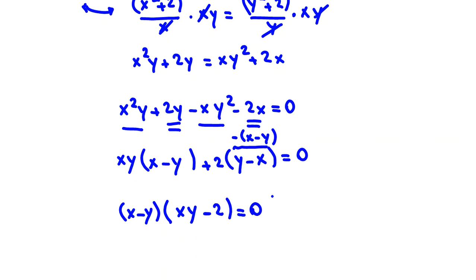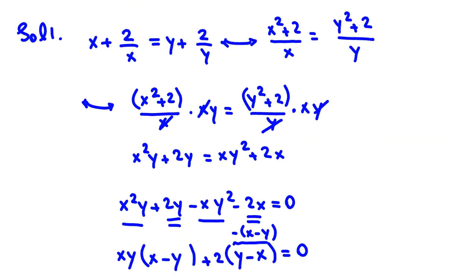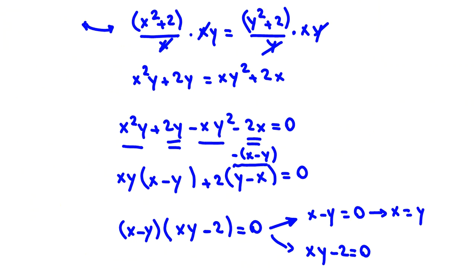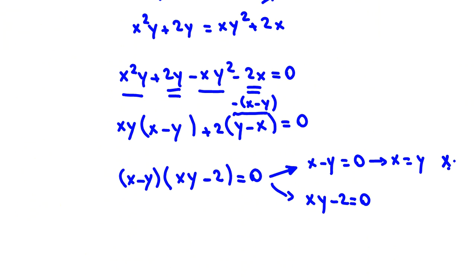Product of two things equal to zero, so at least one of them should be zero. x minus y equals zero, or xy minus 2 equals zero. From first one, x equals y. But in the problem, it says x and y are distinct non-zero. They are not equal. Here we reach contradiction. And only here, we should consider xy equals 2.